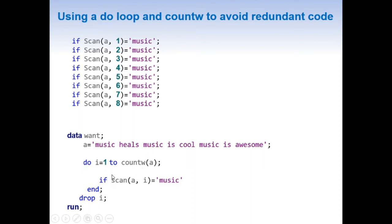Now let us see what exactly is happening in here. When DO i equal to one, this IF scan a comma i becomes if scan a one equal to music. That is, we are extracting the first word and then we are comparing it to music.